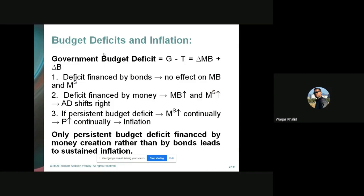To see what the government budget constraint means in practice, consider a case where the government purchases a $100 million supercomputer. If the government succeeds in convincing the public that such a computer is worth paying for, it can raise the $100 million in taxes. In that case, the budget deficit equals zero because G equals T — the government has a balanced budget, and no issuance of money or bonds is needed.